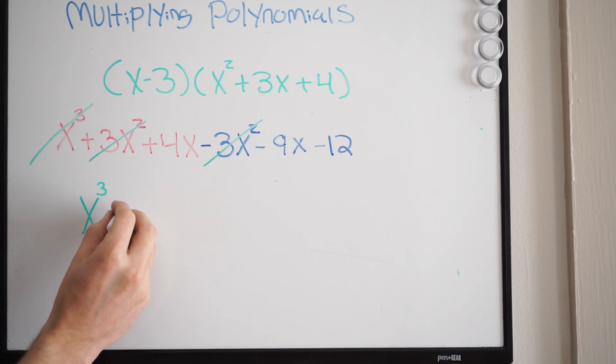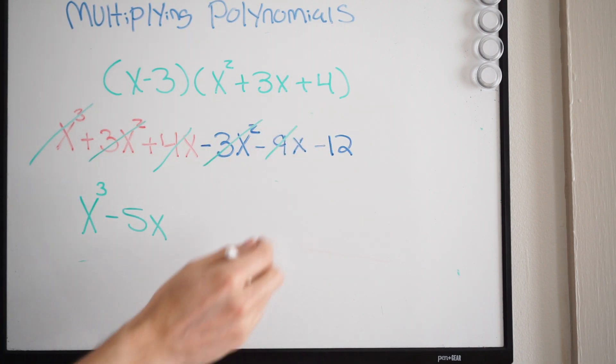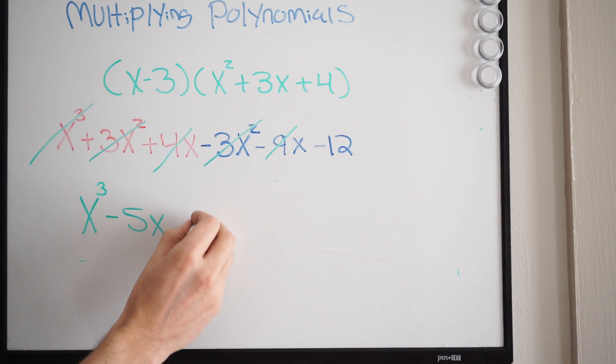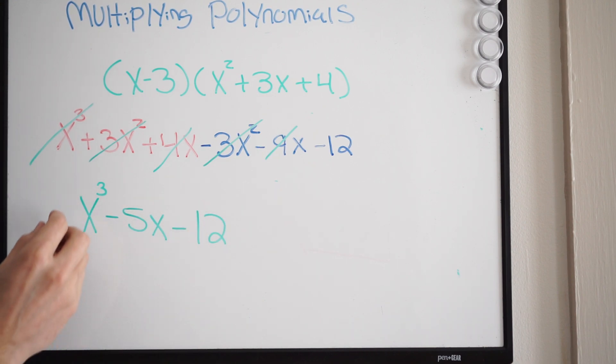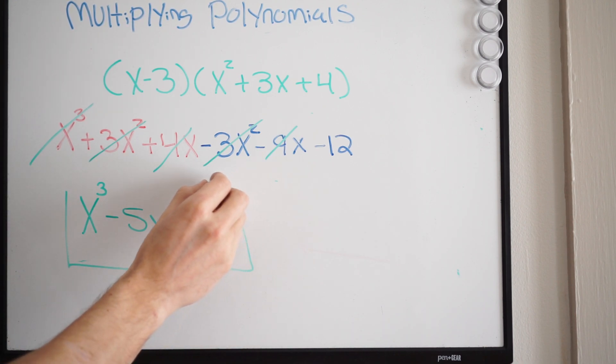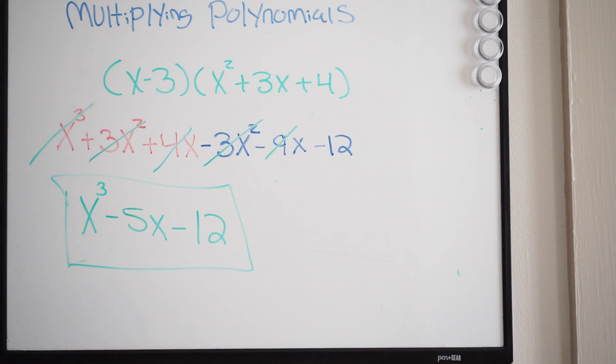So this is gone, and then we just write our last term here, so negative 12. So our final answer here is x cubed minus 5x minus 12.